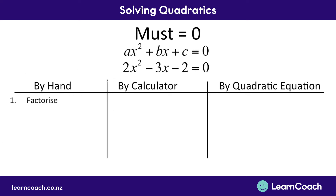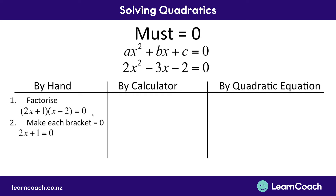Our first step is that we need to factorise. Once we've done this, we should have two sets of brackets, each with an x and each with a number by itself. We then make each bracket equal to zero and solve for x. With the first bracket, 2x plus 1, we rearrange to find x equals negative one half, or negative 0.5. On the second bracket, x minus 2 equals zero, rearranged gives us x equals 2. So our two answers are x equals negative a half and x equals 2.